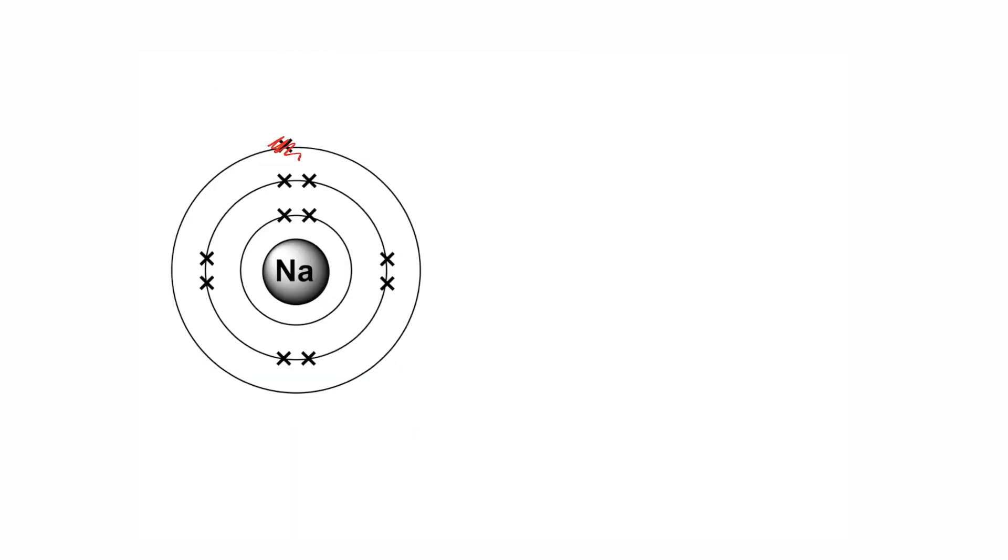But whatever chemical reaction takes place, an electron is transferred or an electron is gained, so now you're left with one or more less electrons or one or more greater electrons. This makes an ion.